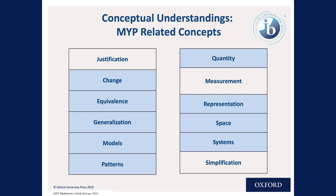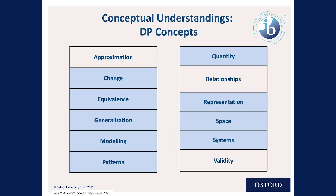The MYP related concepts specified in the guide include these big concepts. They're called related concepts, and they serve as wonderful conceptual lenses you can use when planning your units — I would recommend one or two per unit. The ones in white are unique to the MYP program. The concepts in light blue are common to the Diploma Program. So what is unique to MYP includes justification, measurement, and simplification, while concepts common to both MYP and DP include change, equivalence, generalisation, and others.